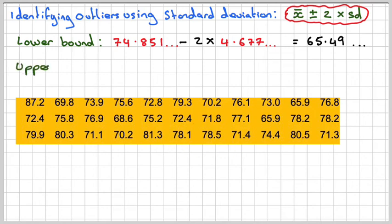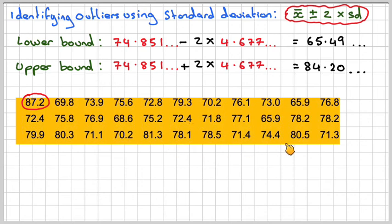For the upper bound, we take the same mean, 74.85, and add 2 times the standard deviation, 2 times 4.677. Again, not rounding off. We get 84.20. Therefore, we see that this piece of data here is the only outlier for this data using the standard deviation method. The only outlier is 87.2.